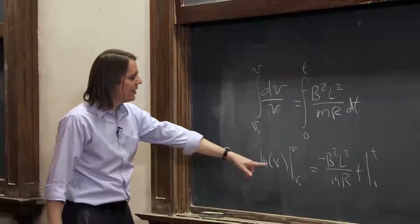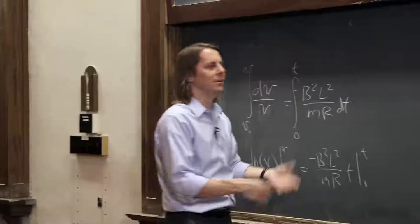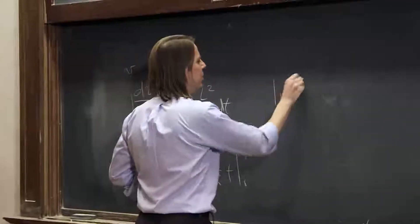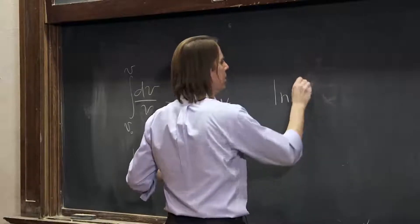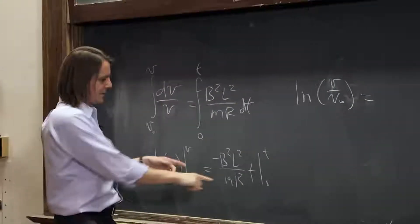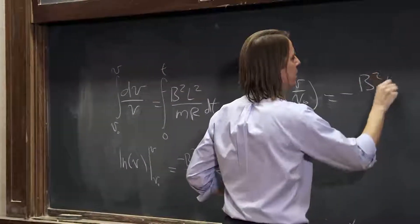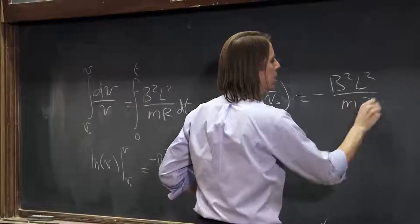So if you plug these in, this is natural log of v minus natural log of v naught. The natural log, when you subtract them, it's really the ratio. This is the natural log of v over v naught. And this, as you plug in t, then you plug in zero, it's just minus b squared L squared over m R t.